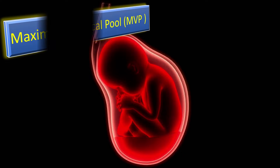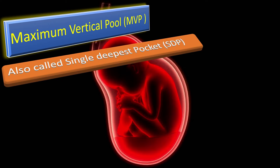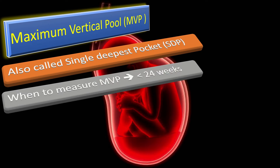Next is measurement of the maximum vertical pool, also called the single deepest pocket. In both singleton and twin pregnancies, it is measured at less than 24 weeks of gestation.